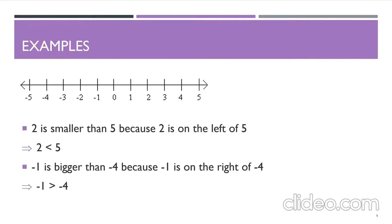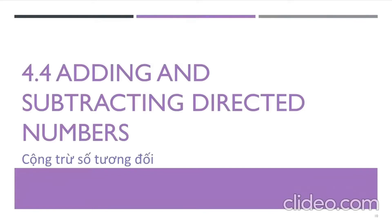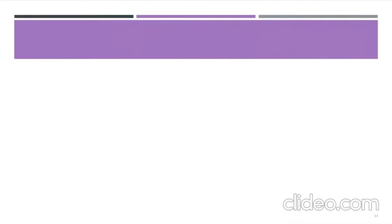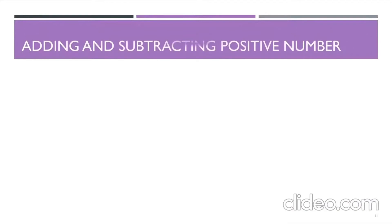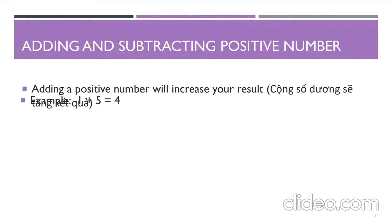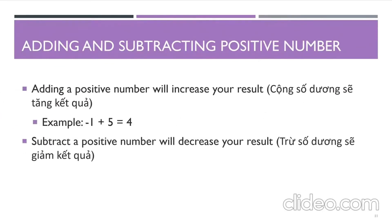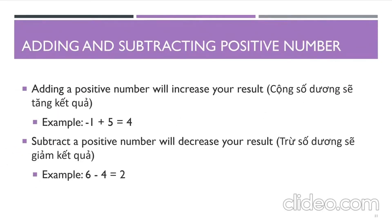The next chapter is about adding and subtracting directed numbers. For positive numbers, adding a positive number will increase your result. And when you subtract a positive number, it will decrease your result. And here are some examples.